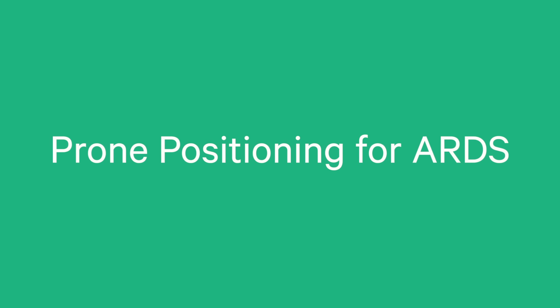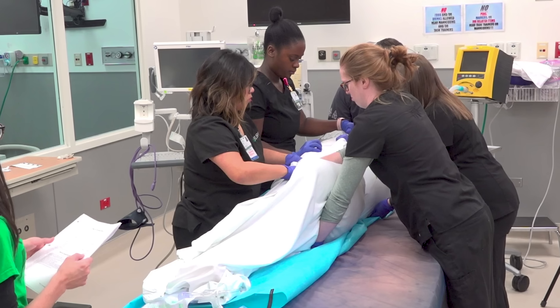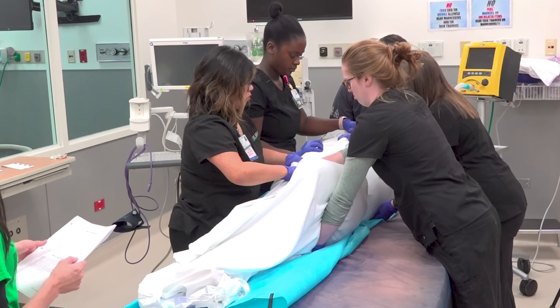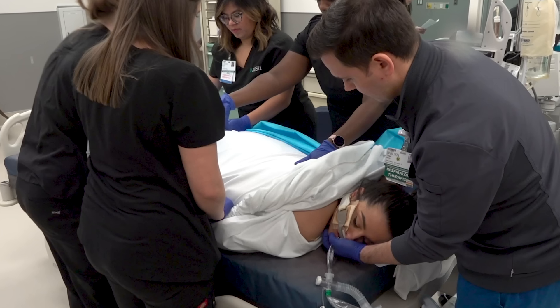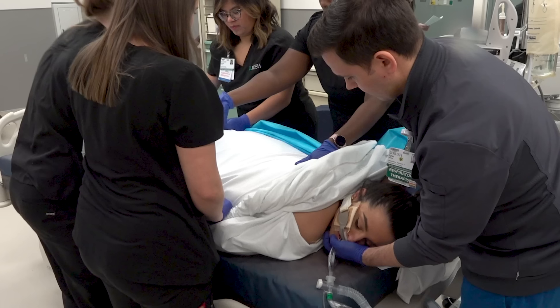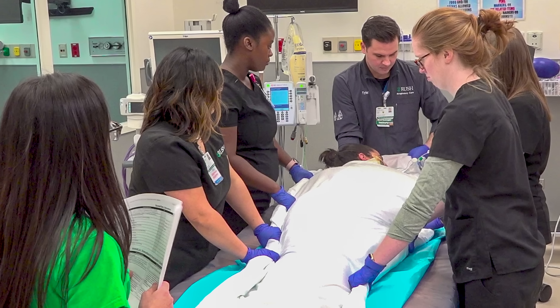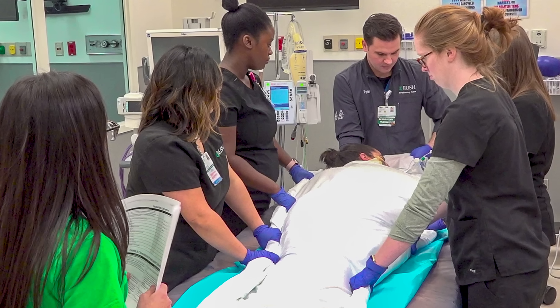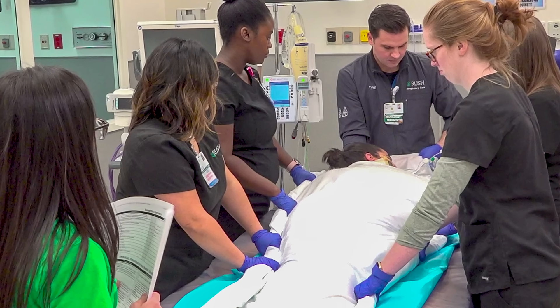Prone positioning has been used to improve oxygenation in patients with acute respiratory distress syndrome, or ARDS. It is typically considered when the PF ratio — the PaO2 divided by the FiO2 — is 150 or less, based on the PROSEVA trial published in 2013. We developed a four-phase checklist to facilitate placing the patient in the prone position, shown in this video.